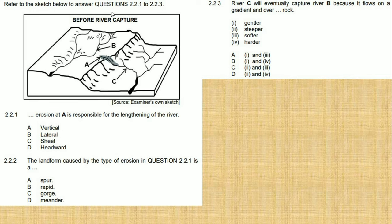Refer to the sketch below to answer questions 2.2.1 to 2.2.3. It's a multiple choice question. We have river A over there, river B flowing over there, then we also have river C. Question 2.2.1 says erosion at A is responsible for the lengthening of the river.